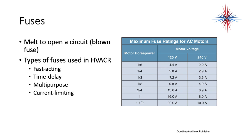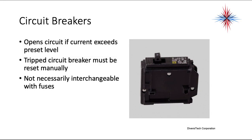Fuses are safety devices — they melt to open a circuit. There are several types used in HVAC: fast acting, time delay, multi-purpose, and current limiting. We also use circuit breakers, which open a circuit if current exceeds a preset level. A tripped circuit breaker must be reset manually. Fuses and circuit breakers are not necessarily interchangeable. If a fuse keeps blowing, there is a problem causing it to blow — putting in a circuit breaker is not the answer.